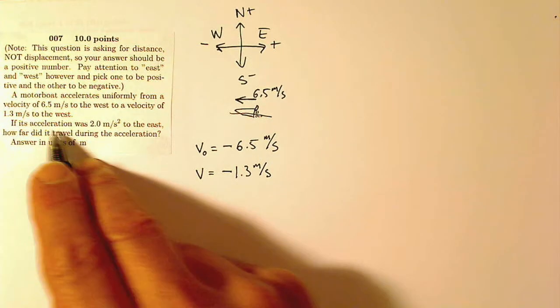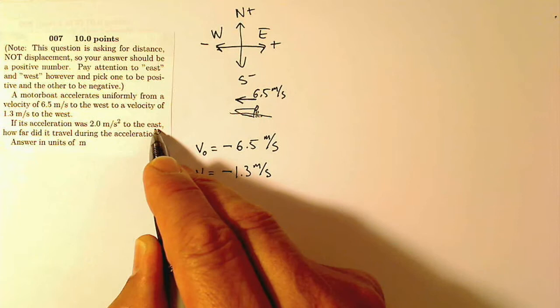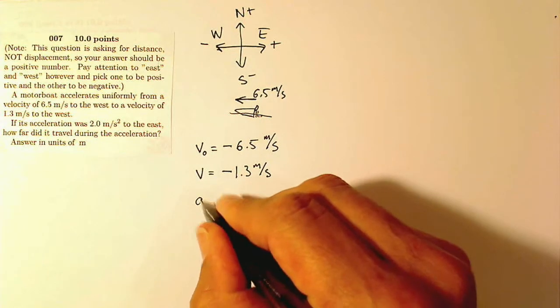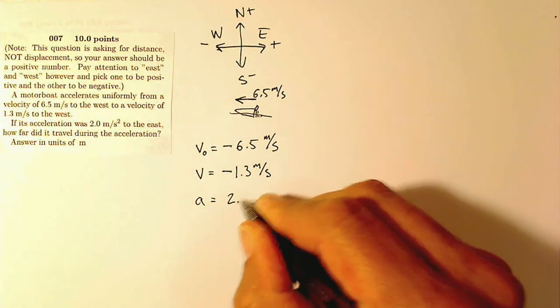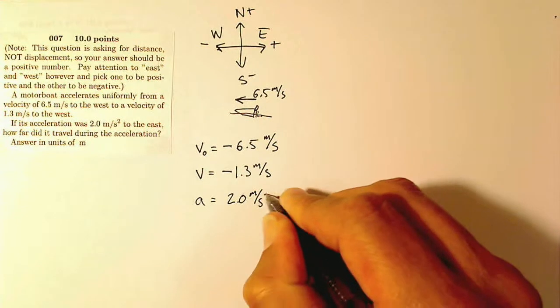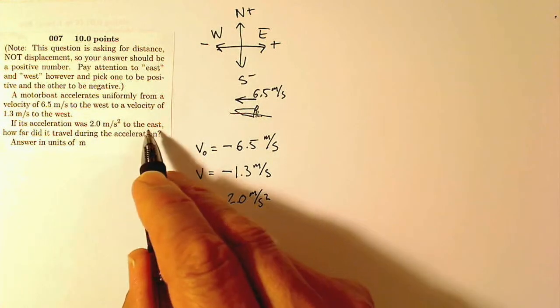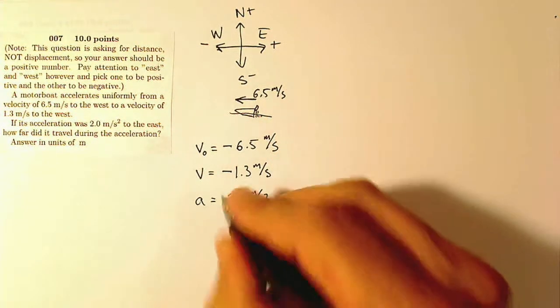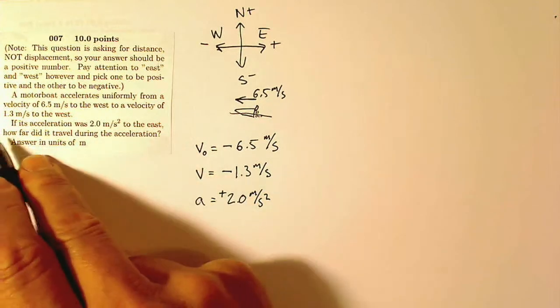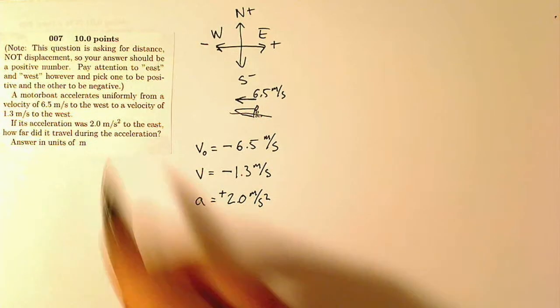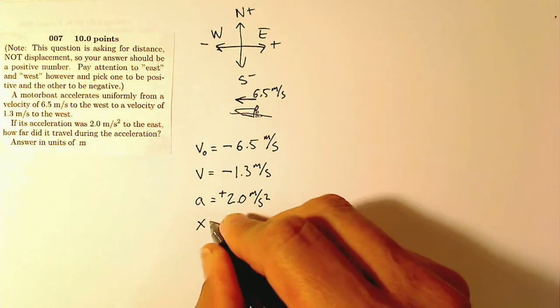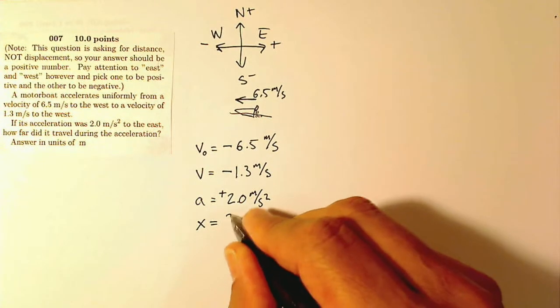If its acceleration was 2.0 meters per second squared to the east, acceleration is 2.0 meters per second squared, and this says to the east. So if it's east, I'm going to label that as positive. How far did it travel during the acceleration? So I'm looking for a displacement, I don't know how far.